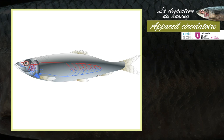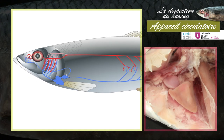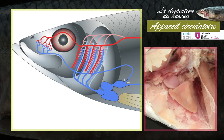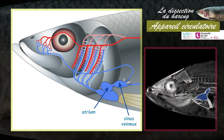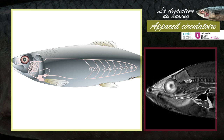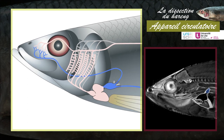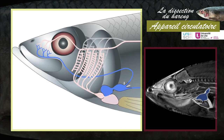Comme tous les autres vertébrés, les téléostéens ont un système circulatoire clos et muni d'un cœur. Le cœur est ventral et situé en arrière du pharynx. Il est divisé en quatre parties : le sinus veineux, l'atrium, le ventricule et le bulbe artériel. Le circuit sanguin forme une boucle simple. Le sang chargé de dioxyde de carbone provenant de la tête et des autres régions du corps rejoint le sinus veineux, se jette dans l'atrium, puis dans le ventricule. La contraction du ventricule propulse le sang dans le bulbe et l'aorte ventrale.